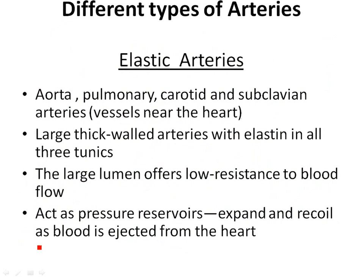Starting with the different types of arteries: the first arteries off the heart are the elastic arteries. These are the arteries really feeling that pressure from the heart — the aorta, pulmonary, carotid, and subclavian arteries — all those vessels near the heart. They're large, thick-walled arteries because they have to withstand the pressure from that heart. They contain lots of elastin as a primary component, which is there to absorb the pressure from heart contractions.